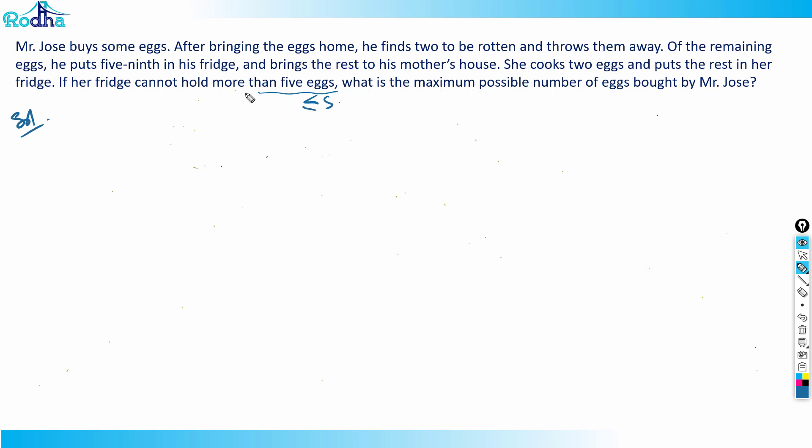What is the maximum possible number of eggs bought by Mr. Joe? Let's say initially he had y plus 2x. Of that, he finds 2x were rotten and throws them away, so now he's left with y. Once he's left with y, he puts five-ninths in his fridge, so he's left with four-ninths.